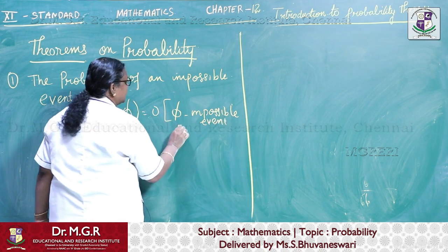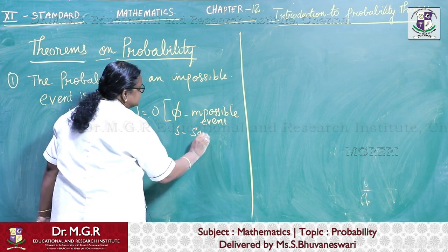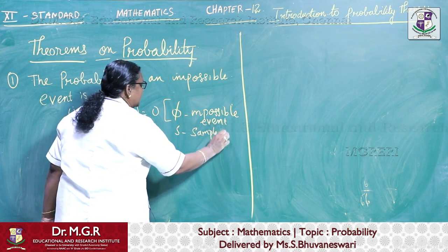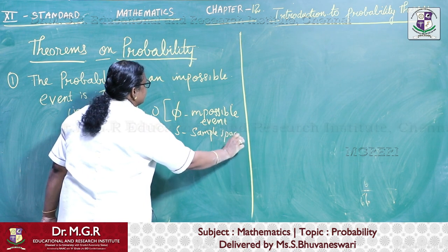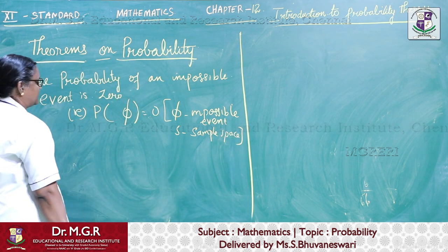What is S called as? S is nothing but the total sample space, total outcomes, and phi is nothing but impossible event.